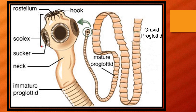You can see how the hooks allow penetration and attachment. The scolex is the head part. From the neck, proglottids grow. These include immature proglottids, mature proglottids, and gravid proglottids.